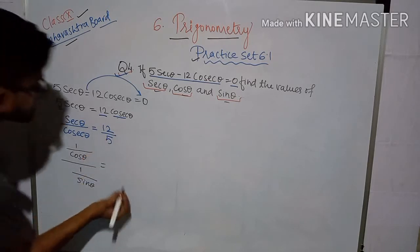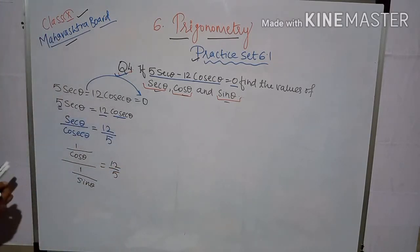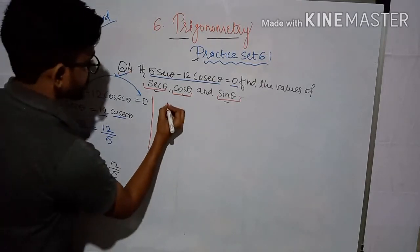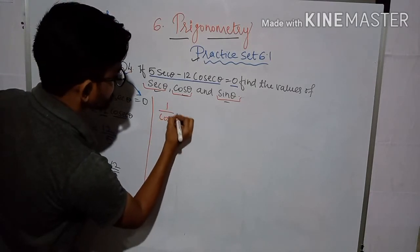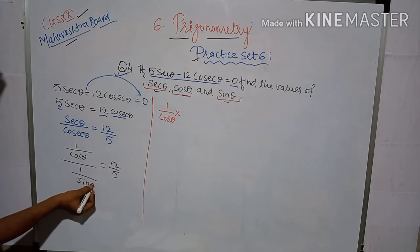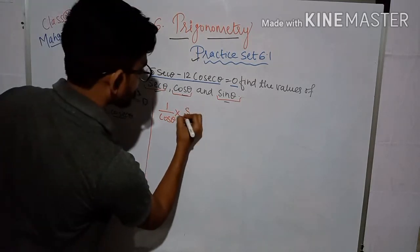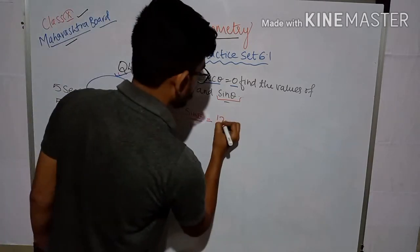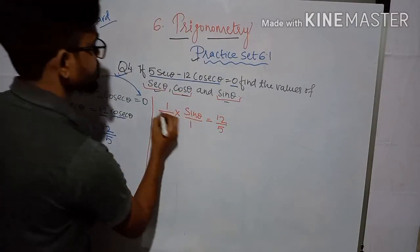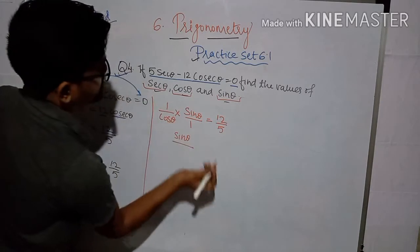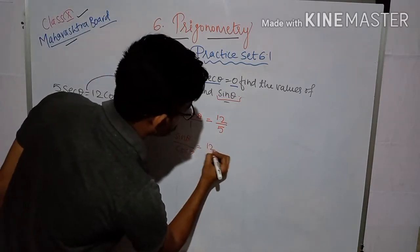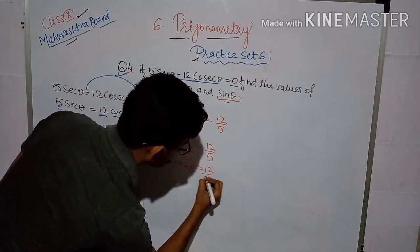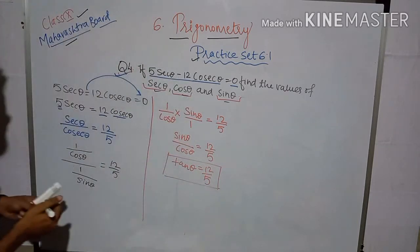So we write: 5 upon cos theta is equal to 12 upon sin theta, that simplifies to 12 upon 5. Taking the reciprocal: sin theta upon cos theta is equal to 12 upon 5. Since sin theta upon cos theta is tan theta, we get tan theta is equal to 12 upon 5.